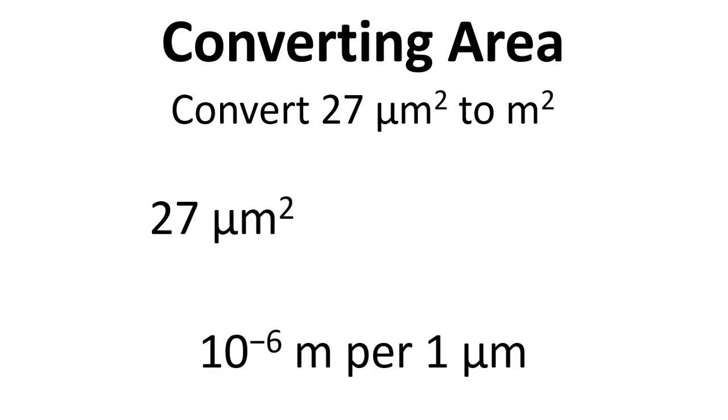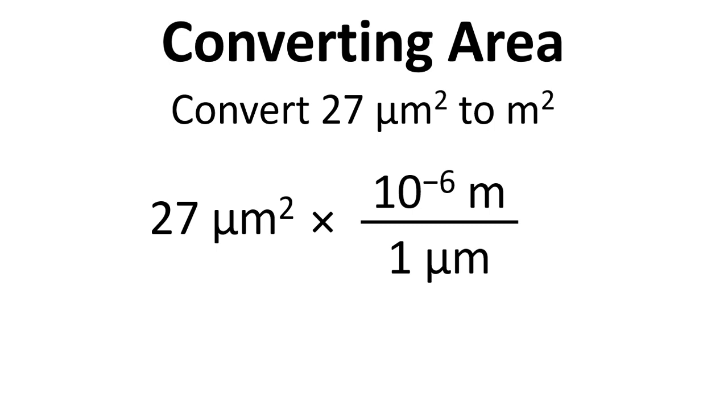We write down what we have. We know there's 10 to the minus 6 m per micrometer, so we multiply by that conversion factor, but we need to square the conversion factor again because the units are squared for the area.